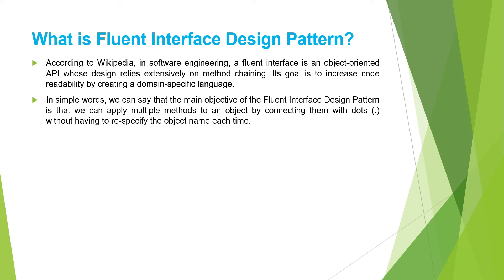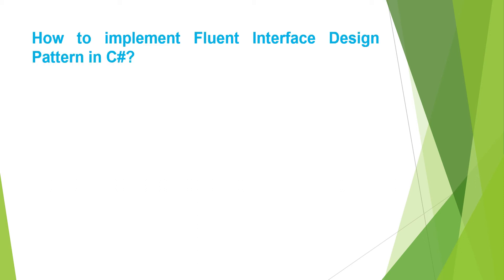Fluent interface and method chaining are two concepts that attempt to make your code readable and simple. In simple words, the main objective of the fluent interface design pattern is that we can apply multiple methods to one object by connecting them with dots, without having to re-specify the object name each time. If this is not clear at the moment, don't worry — we will understand this with an example.